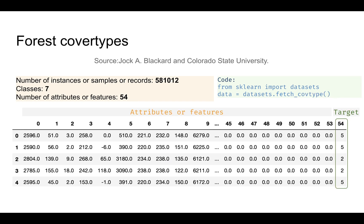Next is the Forest Cover Types dataset. This has about 500,000 records, seven classes, and 54 features — columns 0 through 53 are features and the target is the last column. To load this dataset the command is `fetch_covtype`, and it can be used for classification.